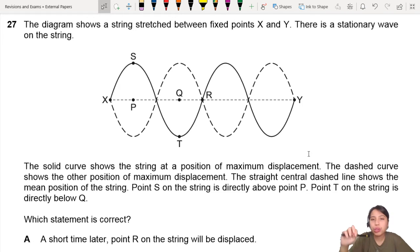The diagram shows a string stretched between fixed points X and Y. There's a stationary wave on the string. I'll show you the thing. Solid curve is maximum displacement. Dashed curve is at another instant of time, there's another maximum displacement.